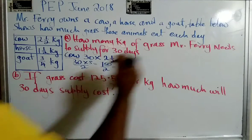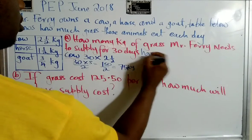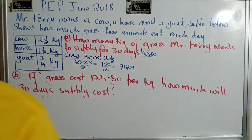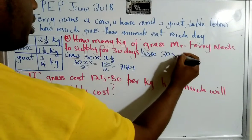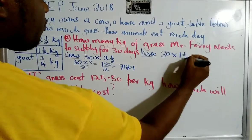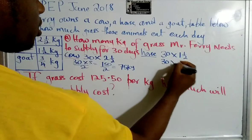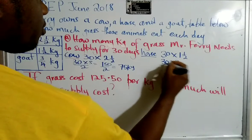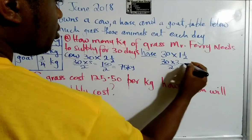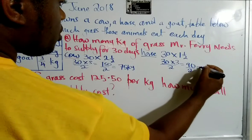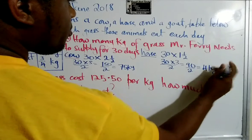Let's check what the horse is going to eat. So the horse, for 30 days, we're going to multiply by one and a half. We can convert one and a half to three over two. So that will be 30 times three over two, which is 90 over two. So that works out to 45 kilograms.